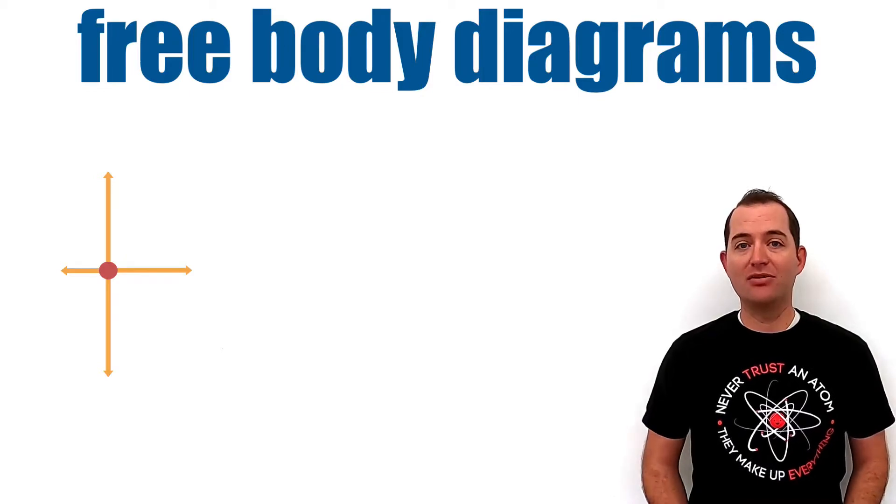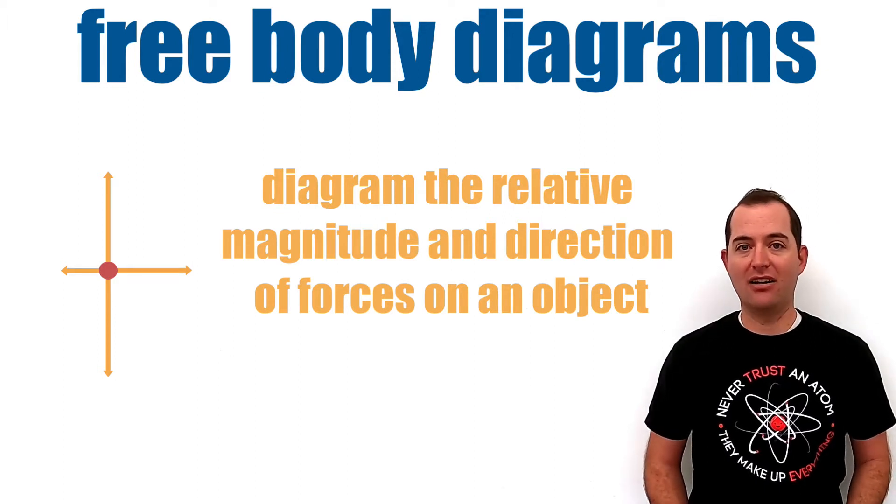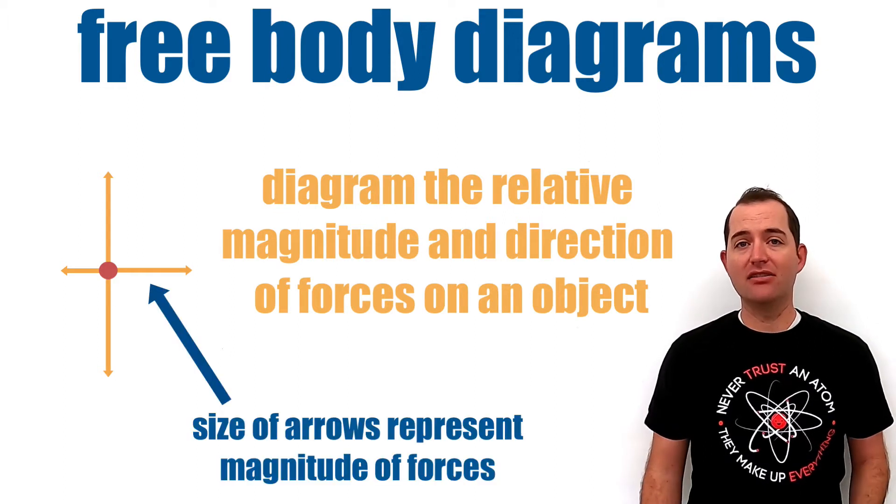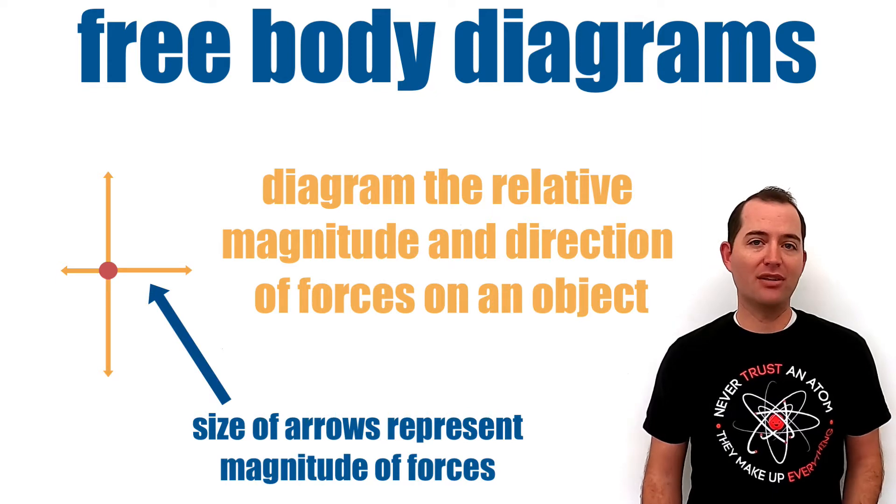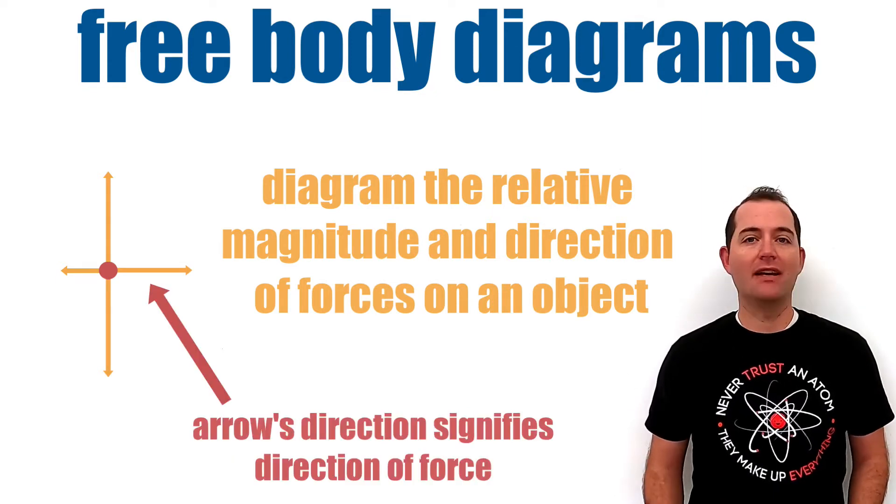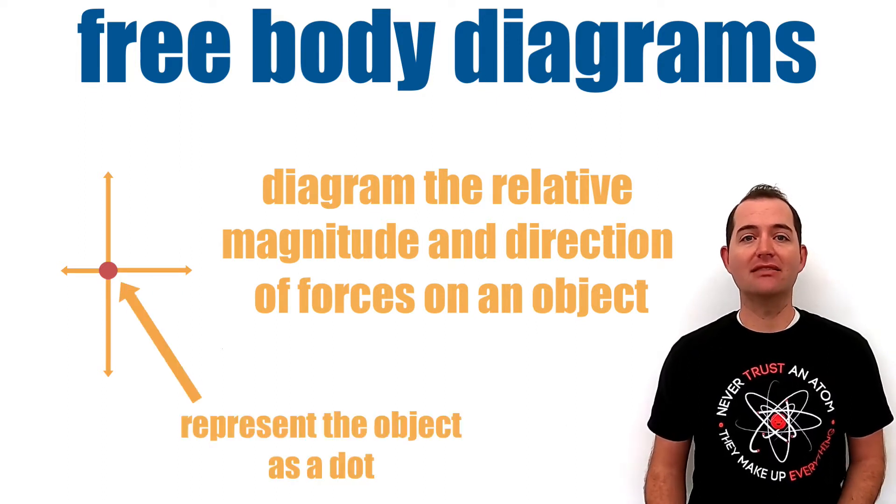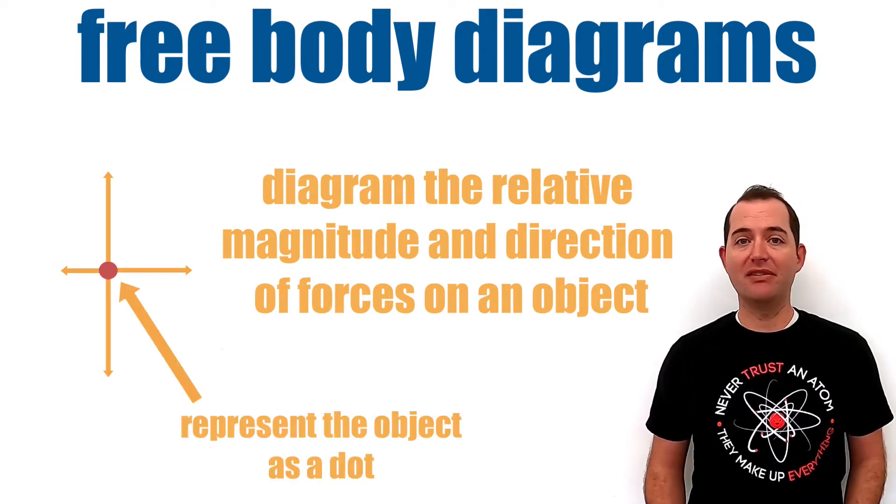Free body diagrams are a tool used to diagram the relative magnitude and direction of forces acting on an object. The size of the arrows represent the magnitude of the force and the arrow's direction signifies the direction of the force. It is common to represent the object on which the forces are acting as a dot. This helps to simplify the diagram.